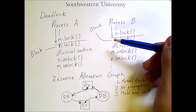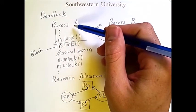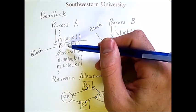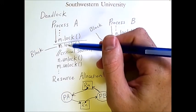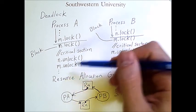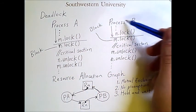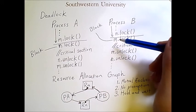It could be that that never happens. It could be that process A locks M and then N so quickly that it's able to get through its critical section and move on and that never coincides with process B locking N and M.